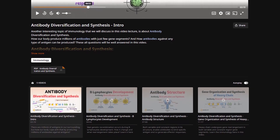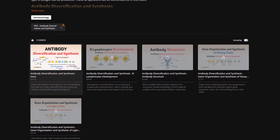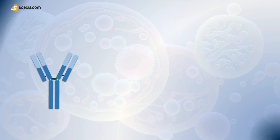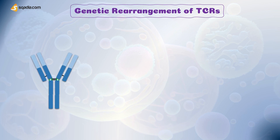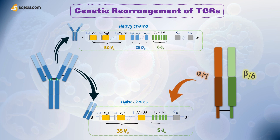This genetic rearrangement of TCR genes is quite similar to that of antibodies or immunoglobulins. We have discussed the diversification of immunoglobulins in a detailed video titled 'Antibody Diversification and Synthesis' — you can check that out. In TCRs, there is no light or heavy chain, but there are alpha and beta chains found in 95% of TCRs, and gamma and delta chains in the remaining 5%. The genetic rearrangement of alpha or gamma chain is similar to that of the light chain of immunoglobulin, and the rearrangement of beta and delta chain is similar to that of the heavy chain.